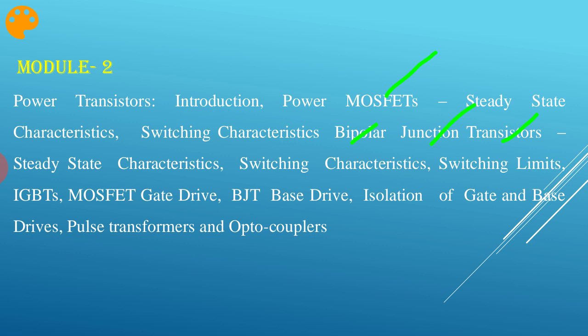Next is the base drive circuits — specifically BJT base drives — covering how the base drive is given and the different techniques used. We also study isolation of gate and base drive circuits, because the gate circuit is low power and the power circuit is high power, so isolation is needed between these two. This isolation is achieved using pulse transformers and optocouplers.